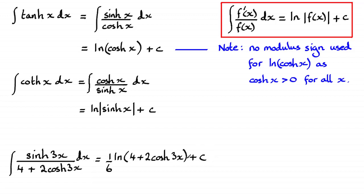And notice again, I haven't put this in modulus signs, purely because cosh of 3x would always be positive for all x, times it by two, that's always positive, and adding four is always positive.